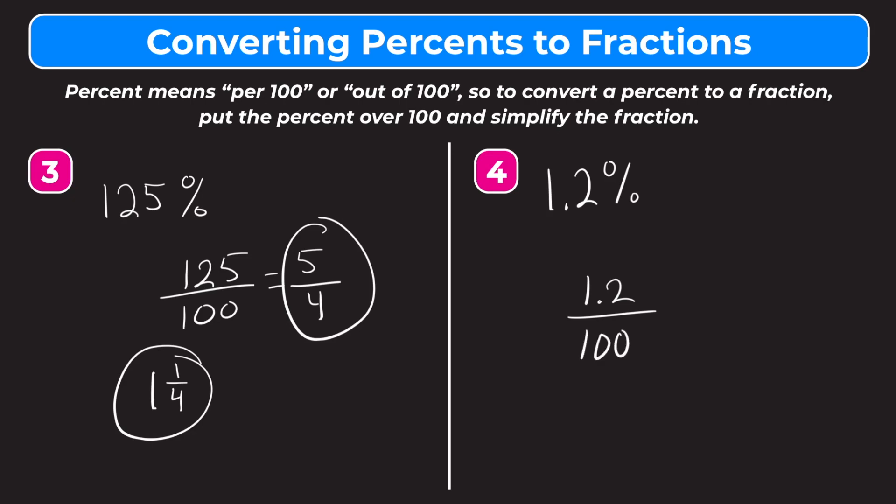But now we have a decimal in our fraction, and that's not nice. We don't like that. It confuses everything. So we have to convert this fraction into a fraction without a decimal. To do that, we can multiply the numerator and the denominator by 10. Essentially what that's going to do is move that decimal point one place to the right. So let's go ahead and do that. Multiply this by 10, multiply this by 10.